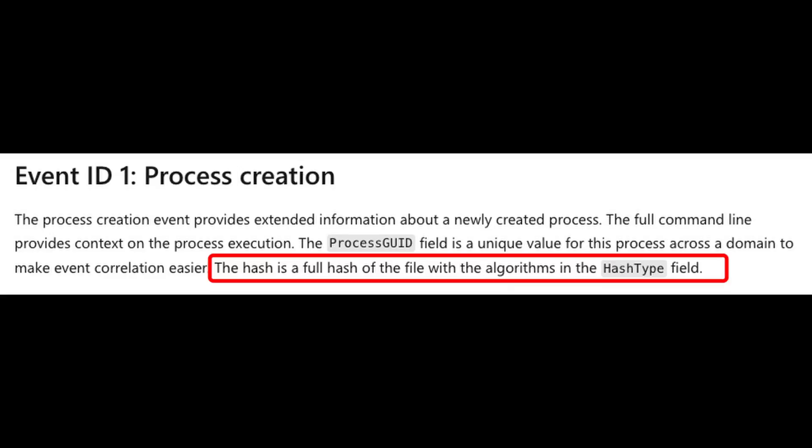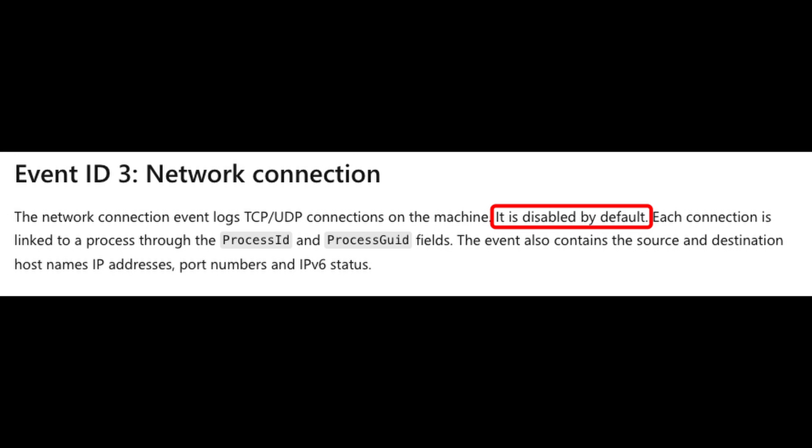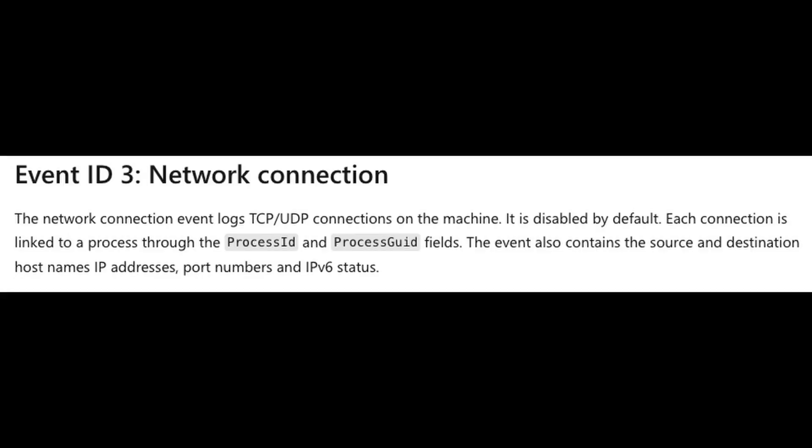The beauty of event ID 1 is that it also tracks the file hash, which you can use to perform OSINT and obtain additional context. The next one is event ID number three, network connections. This event ID is disabled by default and must be enabled via the configuration file. Once enabled, it can track network connections that stemmed from a process, tracking both source and destination IPs along with their ports. So if you stumble across an odd binary running under the temporary directory while looking at event ID 1, you could search the process GUID and see any network connections it made under event ID 3.